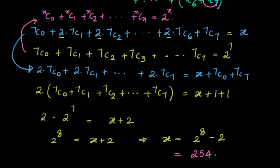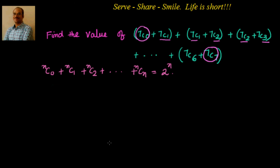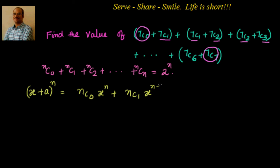Now let us see how this formula is derived. We go to the standard binomial expansion: (X + A)^N equals NC0 × X^N plus NC1 × X^(N-1) × A plus NC2 × X^(N-2) × A^2, and so on, with the last term being NCn × A^N.